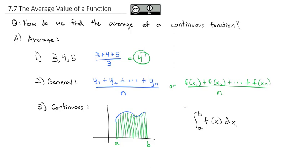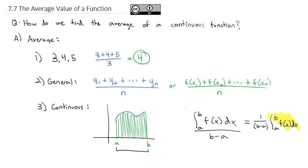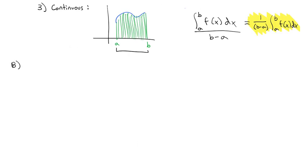Those green lines all together actually make up an integral — the area underneath the curve from a to b of our function f of x dx. Now, if we want to get the average of all that, we don't just add them up; we also need to divide by the number of things. We went from a to b, so if we do b minus a, that'll tell us the number of lines we used. We summarize that as 1 over b minus a times the integral from a to b of f of x dx — that becomes our formula for the average of a continuous function with one variable.